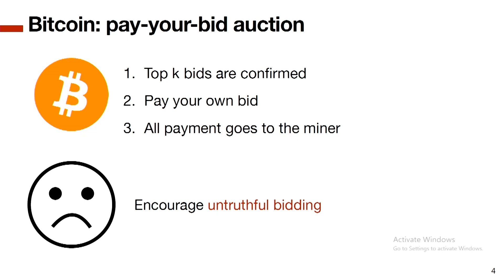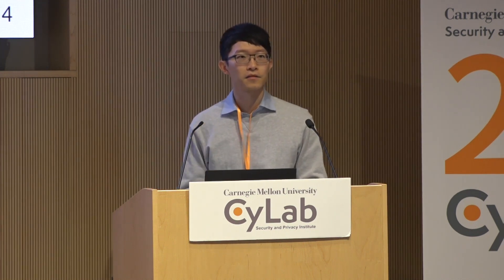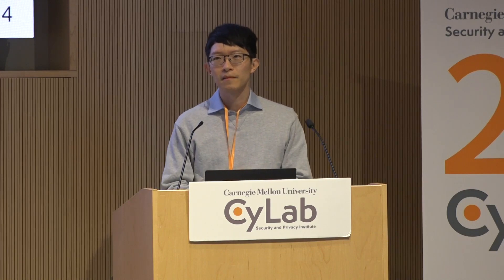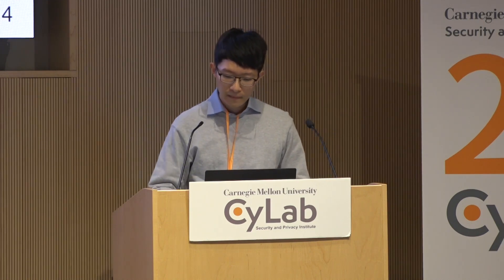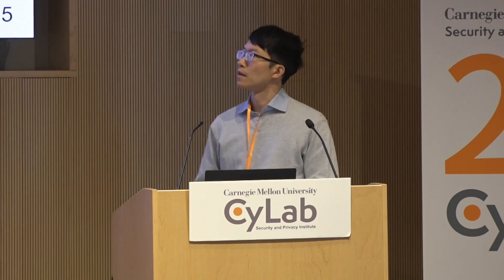What's the issue with Bitcoin's auction? If your true value is five dollars, you don't necessarily bid five dollars. You monitor the network and if most people bid two dollars, you bid 2.01 — just the bare minimum to get into the block. This is bad for users because it costs them a lot of overhead to monitor the network and decide their bid.